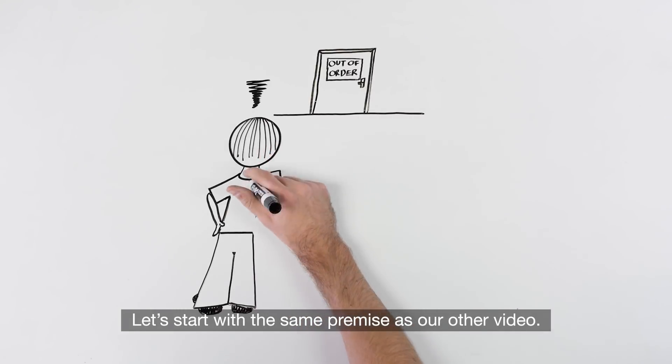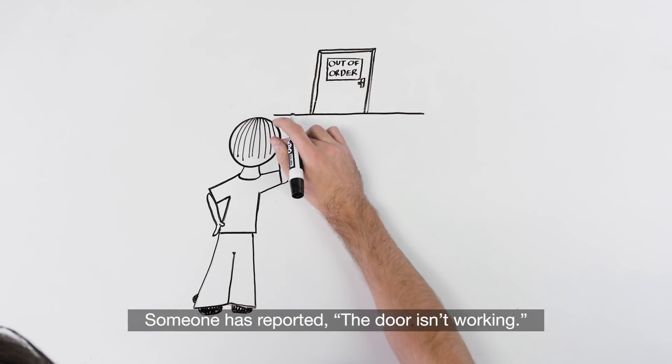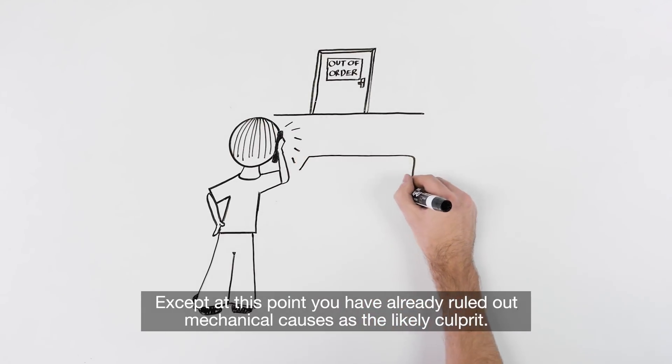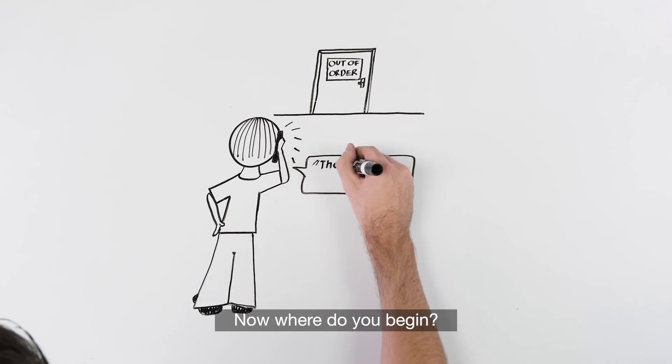Let's start with the same premise on our other video. Someone has reported the door isn't working. Except at this point, you have already ruled out mechanical causes as the likely culprit. Now where do you begin?